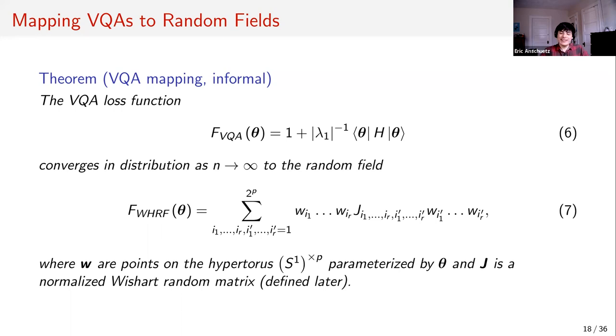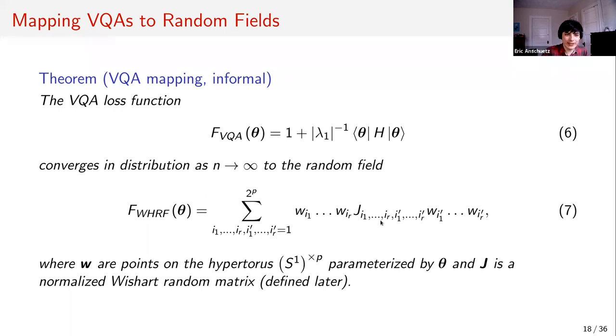In a certain regime this strange torus embedding doesn't matter so much, and in a different regime it does. This depends on the details of the Wishart matrix, which I'll explain now.